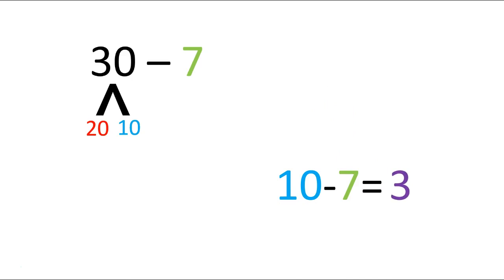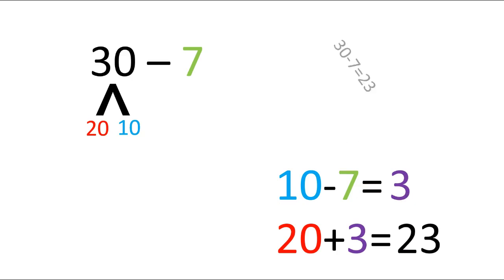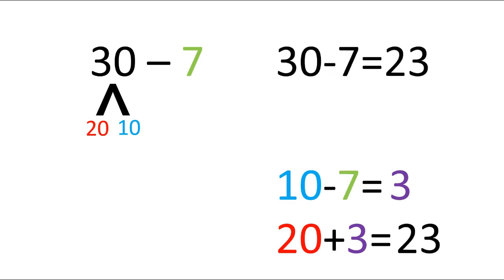You said 3, excellent job. So now we need to take our 20 from over here and we're going to add this 3 that we got. So 20 from here, 3 from here. What's 20 plus 3? Did you say 23? Excellent job if you did. So 30 minus 7 equals 23.